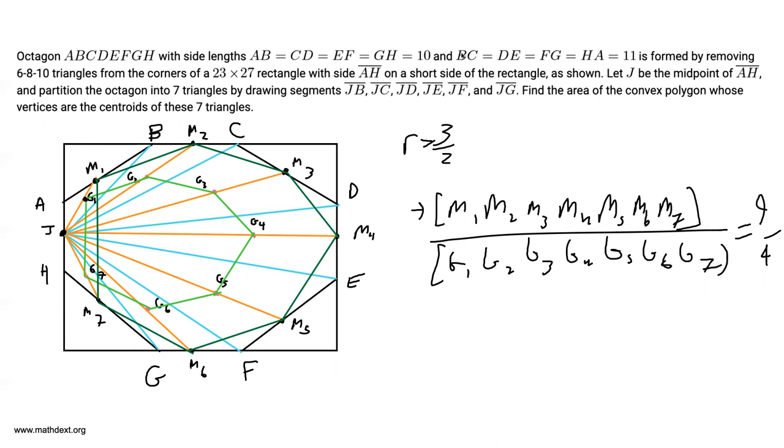And how can we do that? We can use our best friend, which is called complementary area, finding the area of this big rectangle and subtracting out all the parts we don't want. First of all, these four triangles over here have legs 6 and 8, which means that the area of one of these triangles is 6 times 8 divided by 2, which is 24.